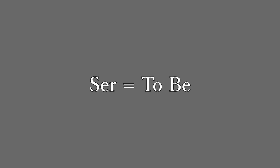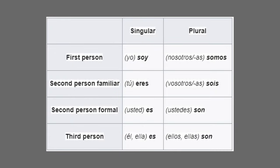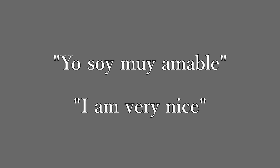Now we have the irregular verb ser, which means 'to be': yo soy (I am), tú eres (you are), usted es (you are formally), él/ella es (he/she is), nosotros somos (we are), vosotros sois (you all are), ustedes son (you all are), ellos/ellas son (they are). An example: yo soy muy amable — I am very nice.